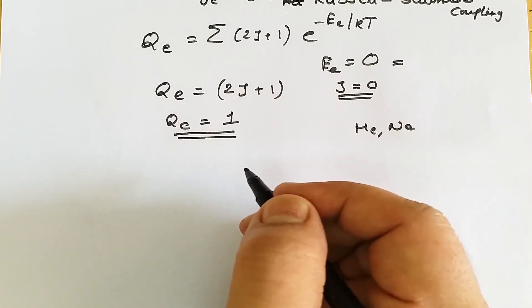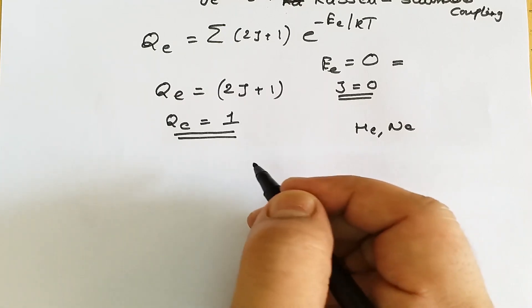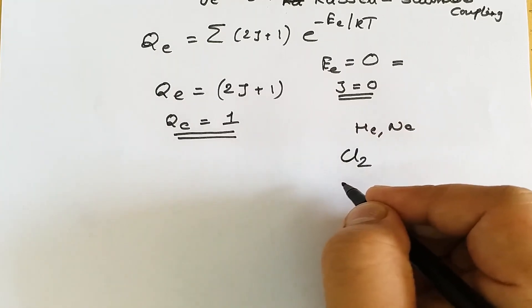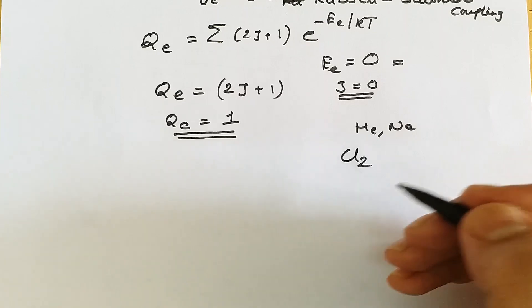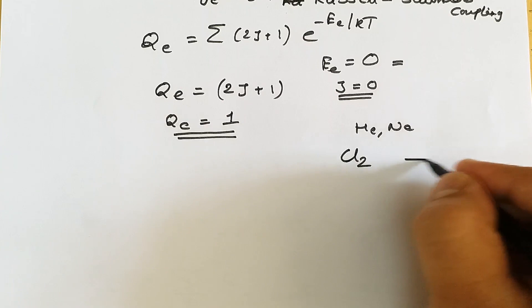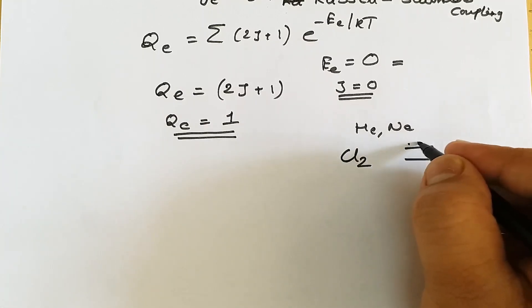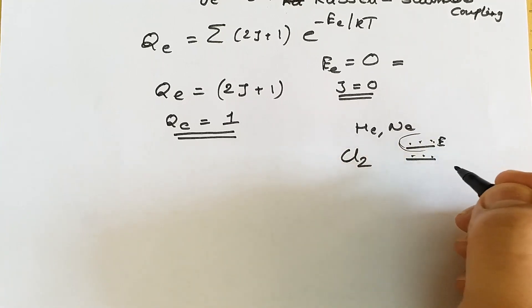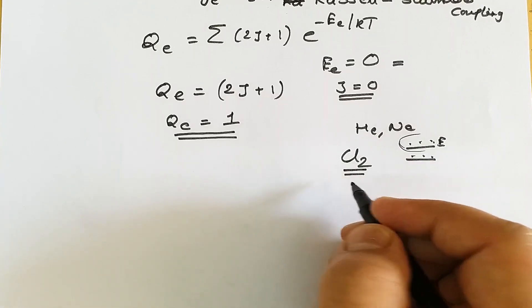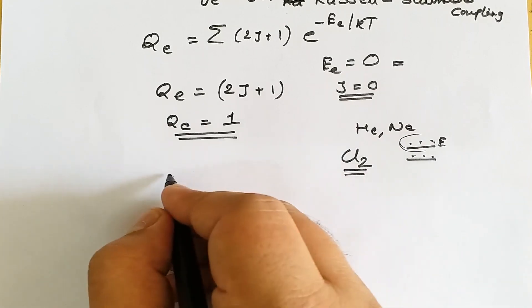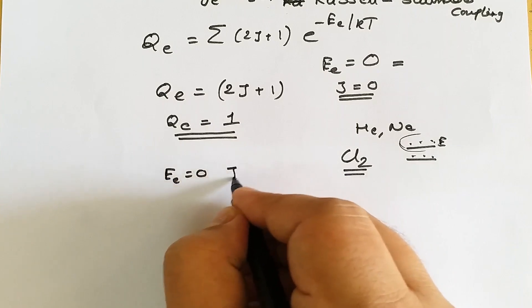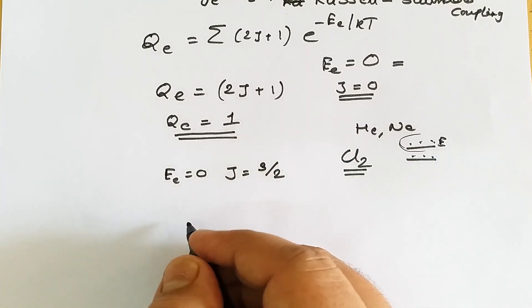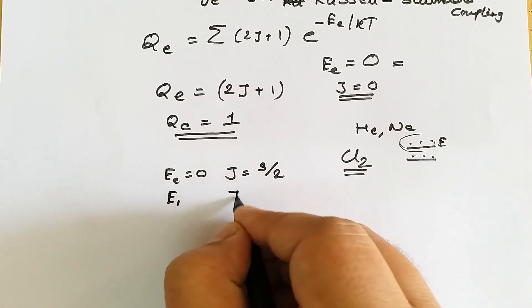For diatomic molecules, there are one or more electronic states present above the ground state. For example, in the case of the chlorine atom, there are more than one electronic states above the ground state, and these states are also considerably populated at room temperature, so their energies must be considered. For chlorine, in the lowest energy state, the energy is zero and the angular momentum quantum number J is 3/2. Not very far from this state, there is another state with energy e1 and J equal to 1/2.